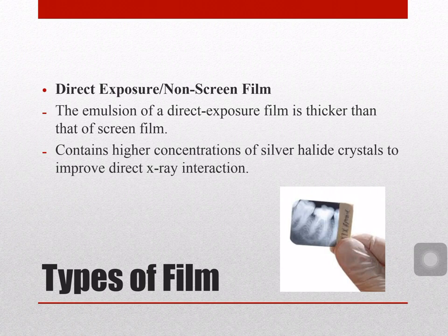This type of film is used to image thin body parts, such as hands and feet, which are thinner compared to other parts of the body. A direct exposure film can produce high subject contrast. It interacts directly with x-rays and doesn't need light to produce the latent image — x-rays interact directly with the silver halide crystals to form the latent image.